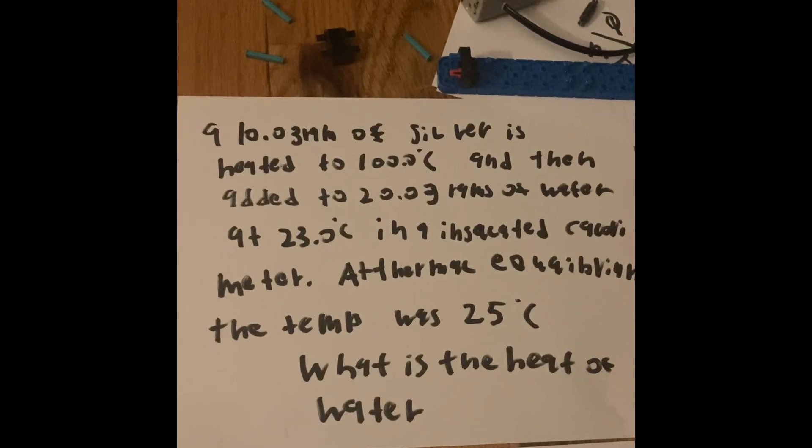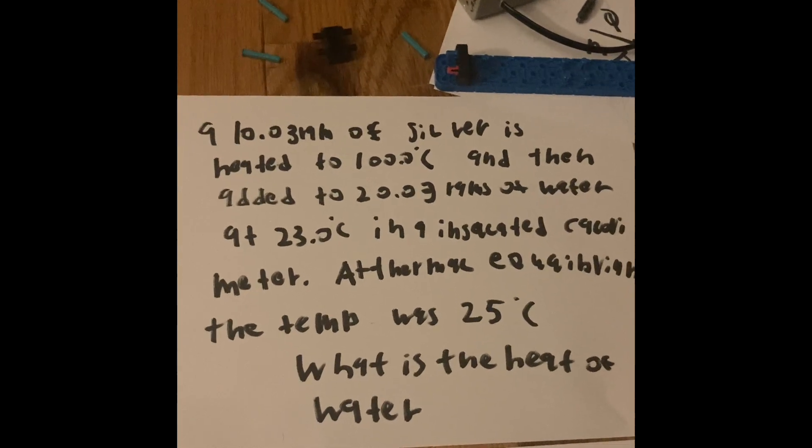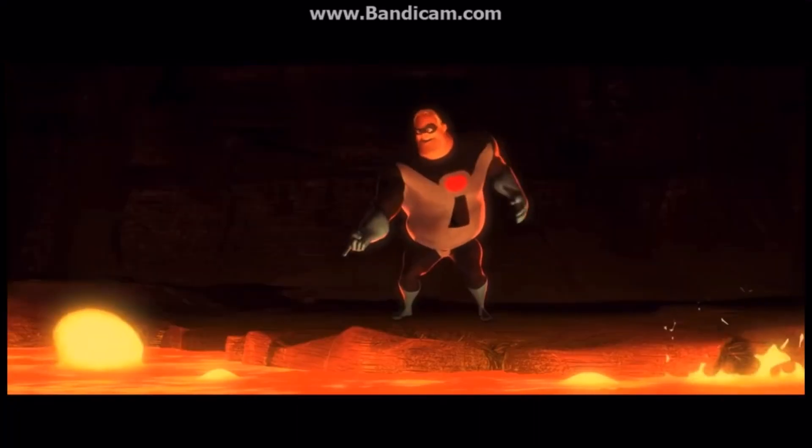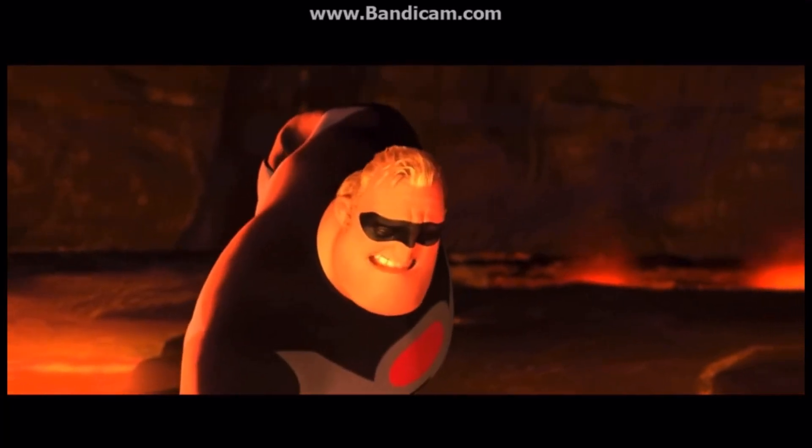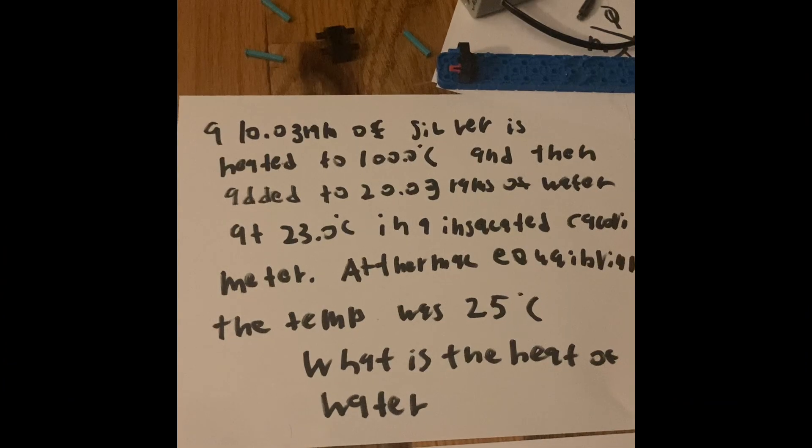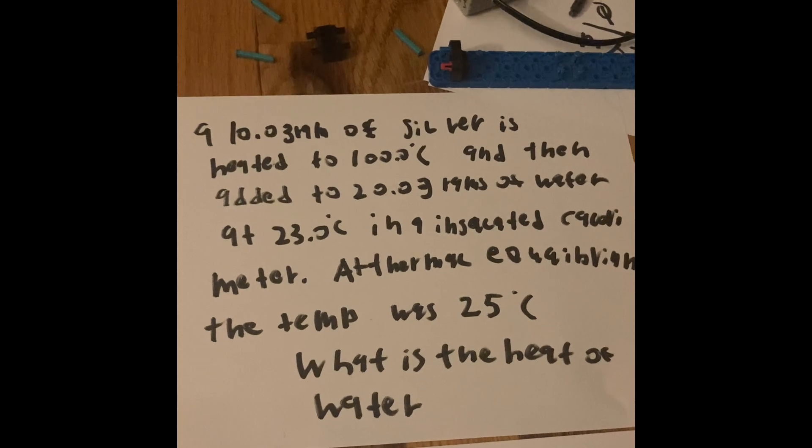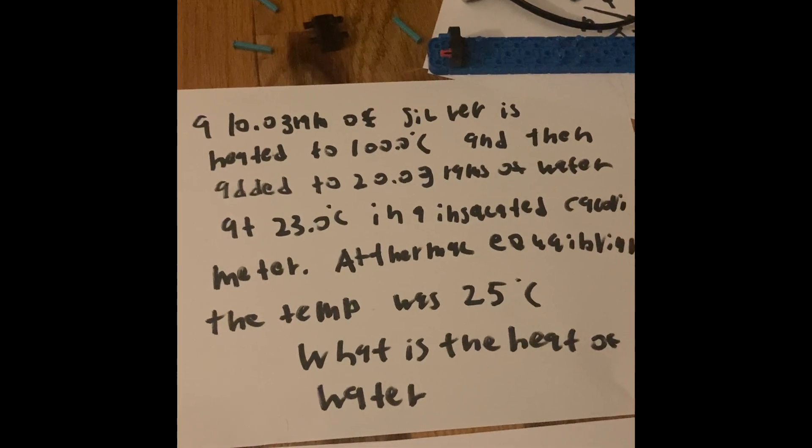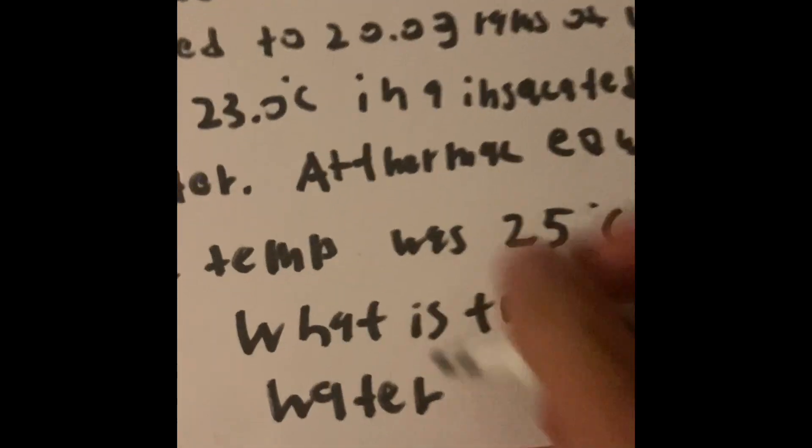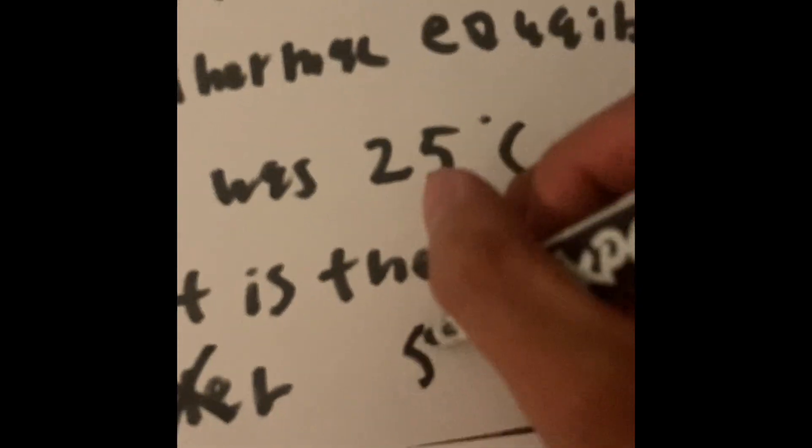So we put 10 grams of silver and make it really hot. Then we put that object into a calorimeter so we can measure how much energy it has. But we're trying to find not the heat of the water, we're trying to find the heat of the silver, because we already know the heat of the water.